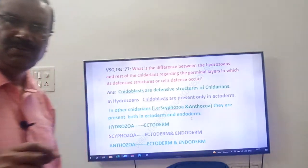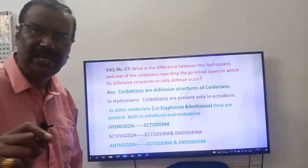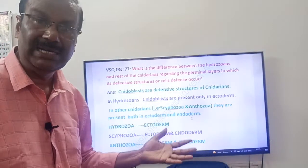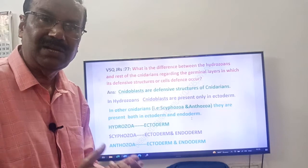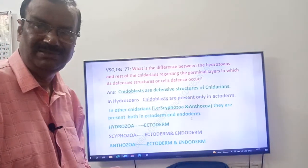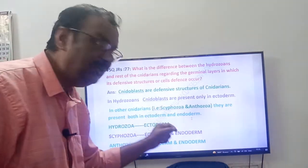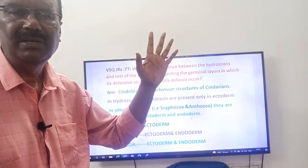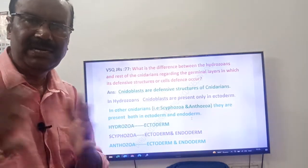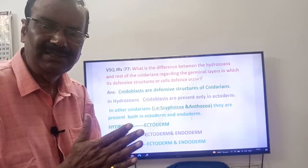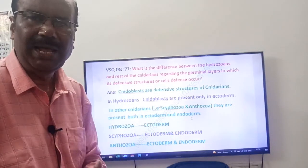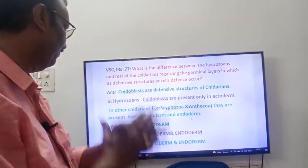In Hydrozoa, nidoblasts are present only in the ectoderm. Whereas in the other Cnidarians — Scyphozoa and Anthozoa — nidoblasts are present in both the ectoderm and the endoderm. So Hydrozoa have nidoblasts only in the ectoderm, while Scyphozoa and Anthozoans have nidoblasts in both ectoderm and endoderm.